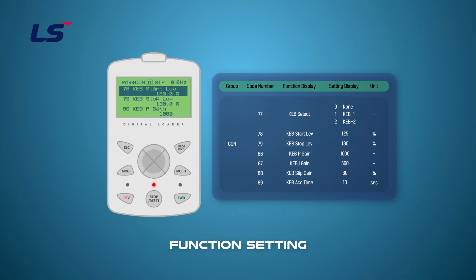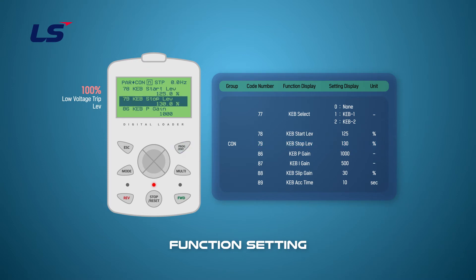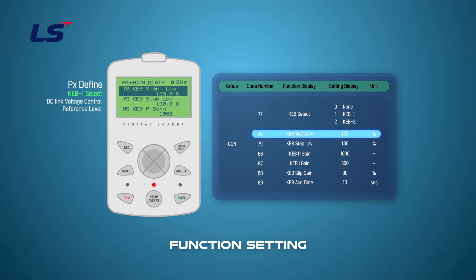The start and stop points of the energy buffering operation are set based on the low voltage trip level at 100%. The start level is set in CON 78 and the stop level is set in CON 79, which must be set higher than the start level. In the case of energy buffering operation through the terminal block input function setting, the start and stop points are determined through the terminal block input. Therefore, KEB start level CON 78 is used as the reference level for DC link voltage control in energy buffering operation, not as the starting point.